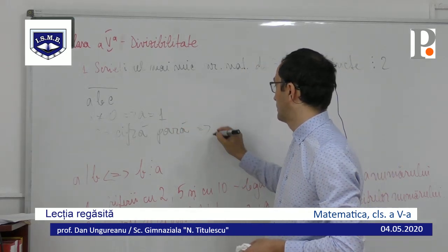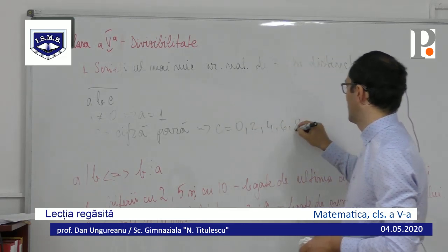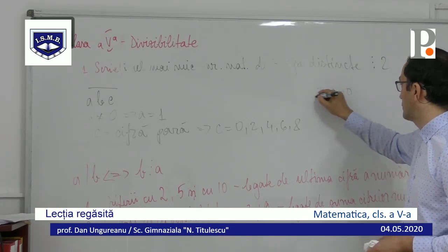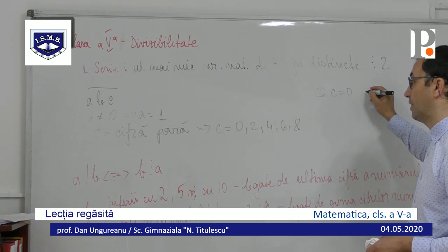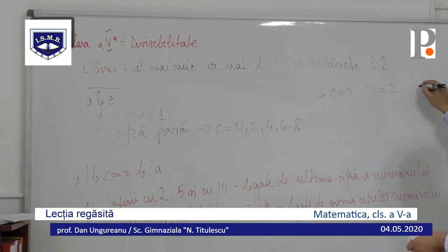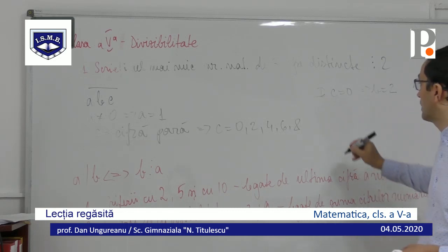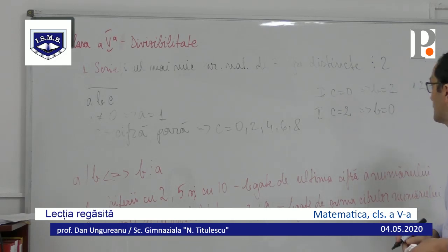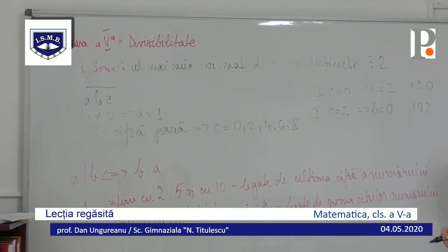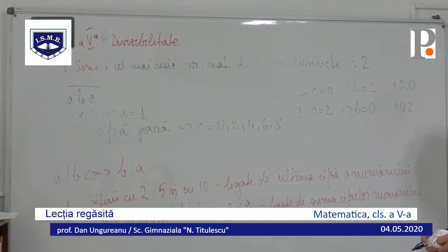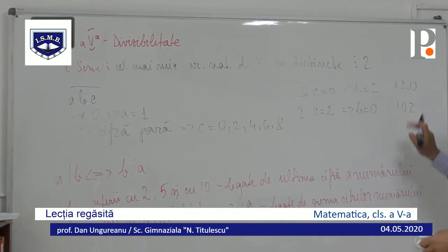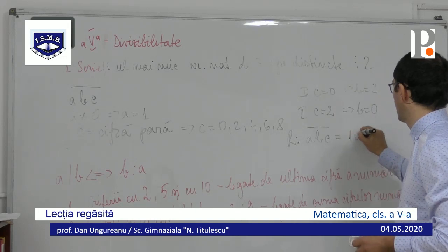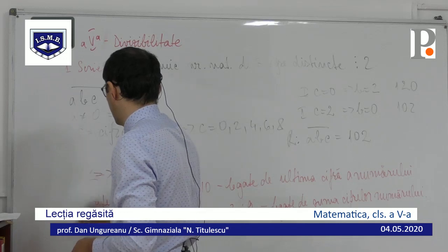Dacă alegem C egal cu 0, primul caz, ne rămâne pentru B cifra 2 și numărul este 120. Atenție că s-ar putea să nu fie cel mai mic. Pentru a doua posibilitate, C egal cu 2, avem pentru B cifra 0 și numărul 102 este par, este divizibil cu 2 și este mai mic decât 120. Dacă mergem cu C mai mare nu are sens. Deci numărul căutat ABC este 102.